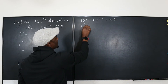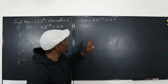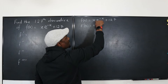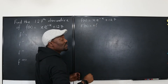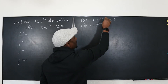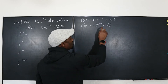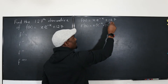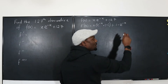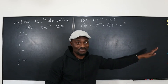What is f prime of x? We're going to apply the product rule. Keep the first and differentiate the second: the derivative of e^(−x) is e^(−x) multiplied by negative one. Then differentiate the first, which is just one, and keep the second, e^(−x). The 127 is actually a distraction from the beginning because the first derivative gets rid of the constant.